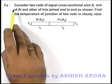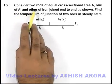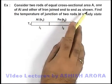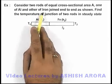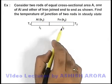In this example, we are given to consider two rods of equal cross-sectional area A, one of aluminum and other of iron, joined end to end as shown in the figure.